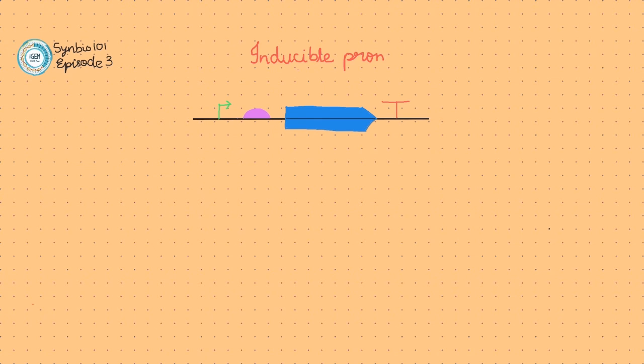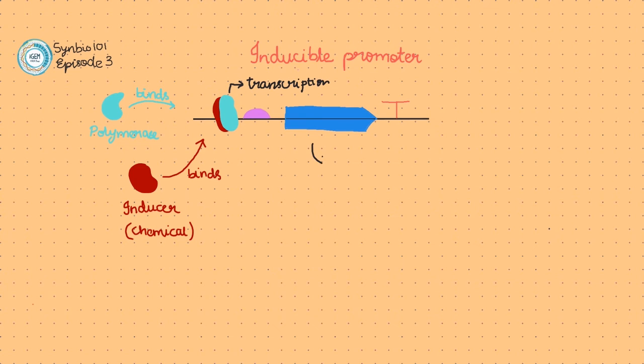We can instead use a promoter that is induced, or in other words, turned on and off by a certain chemical. This means that the protein coded by the DNA downstream, which in this case is the light producing protein, would only be expressed in the presence of this chemical. This would allow us to make a part of the plant glow only when we sprayed it with that chemical.